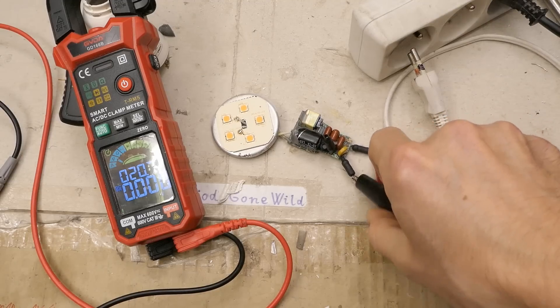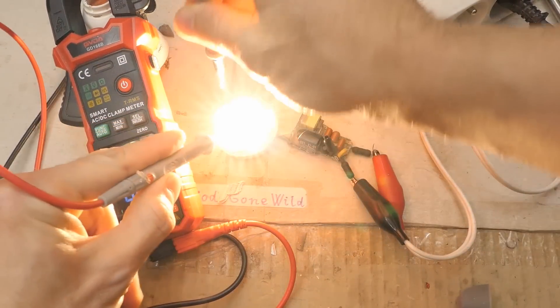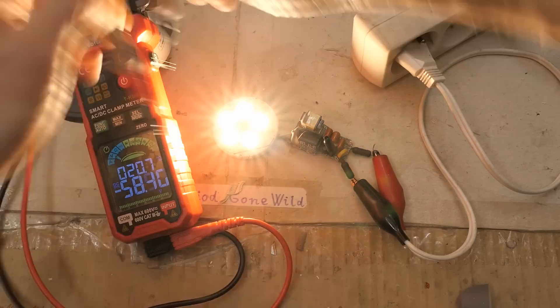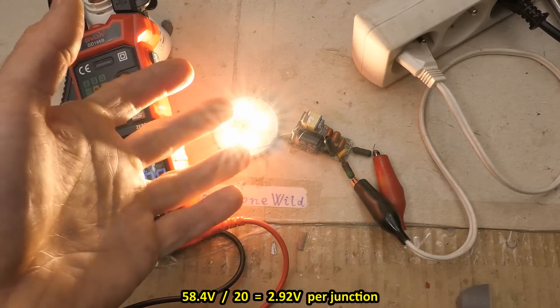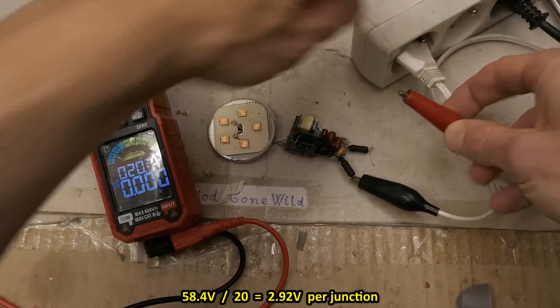Let's give it one more try and let's try to measure the voltage on the LEDs. Of course now I'm completely blind. And it says 58.4 volts on all the LEDs in series. And this looks like 4 chips in each of 5 packages. That's 20 LED junctions and each of them about 2.9 volts voltage drop. But now let's try to reverse engineer it.